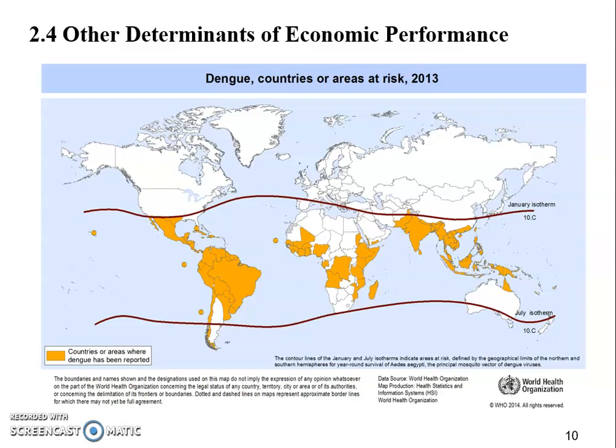How could that affect economic performance? The first possible way is: when you get sick, you won't be as productive. In other words, the higher risk of getting these diseases will reduce the quality of the working-force population in these economies.